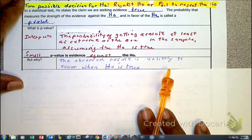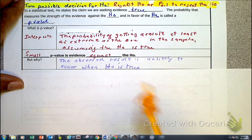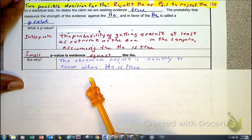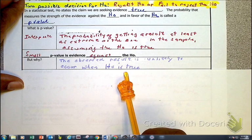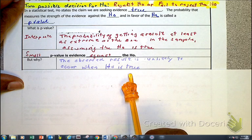So a small p, we're going to reject the null hypothesis. And your question is, well, why? Because here it's really unlikely that the null hypothesis is going to occur, that it's true.